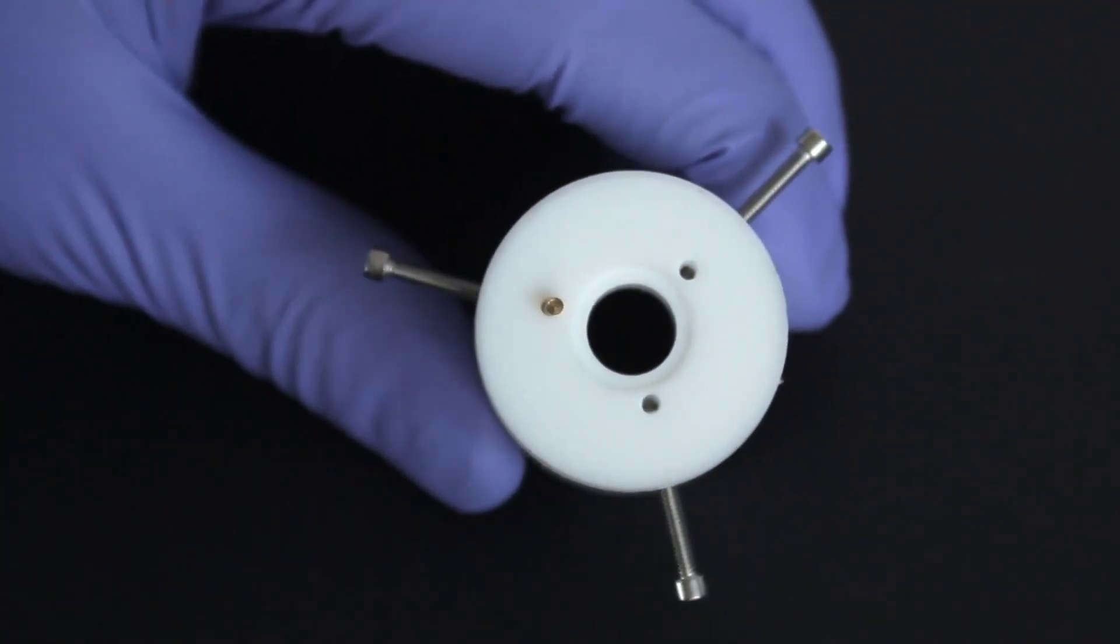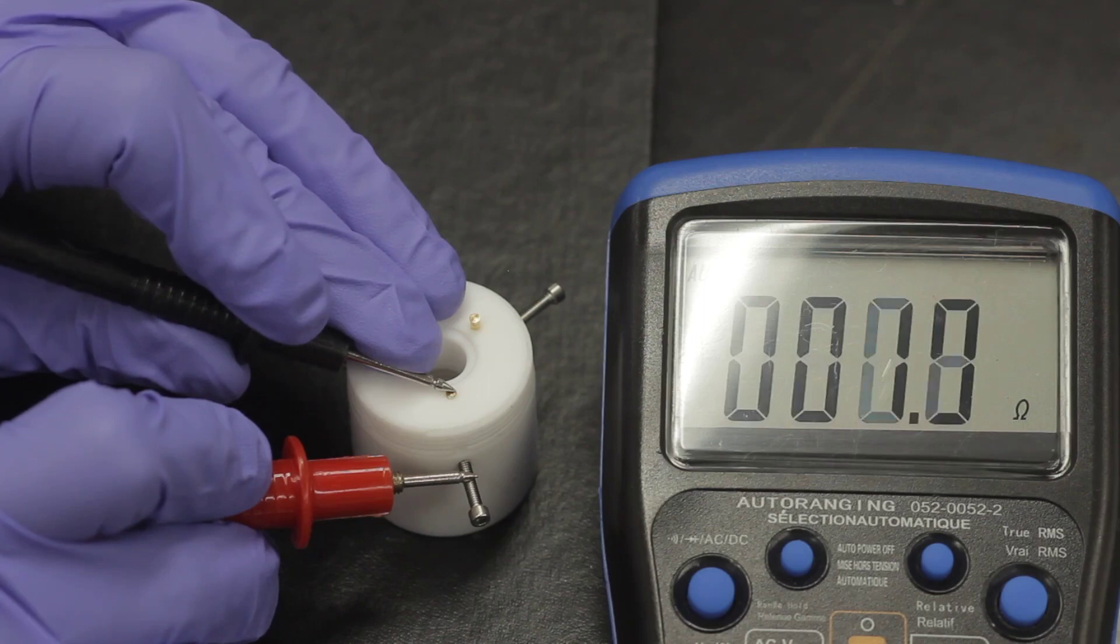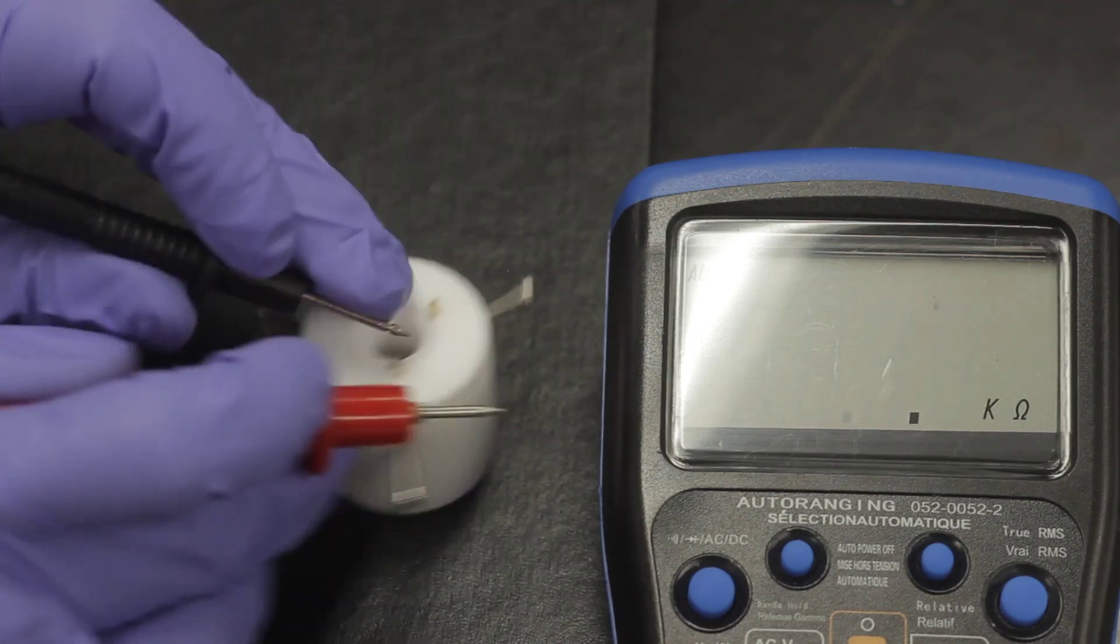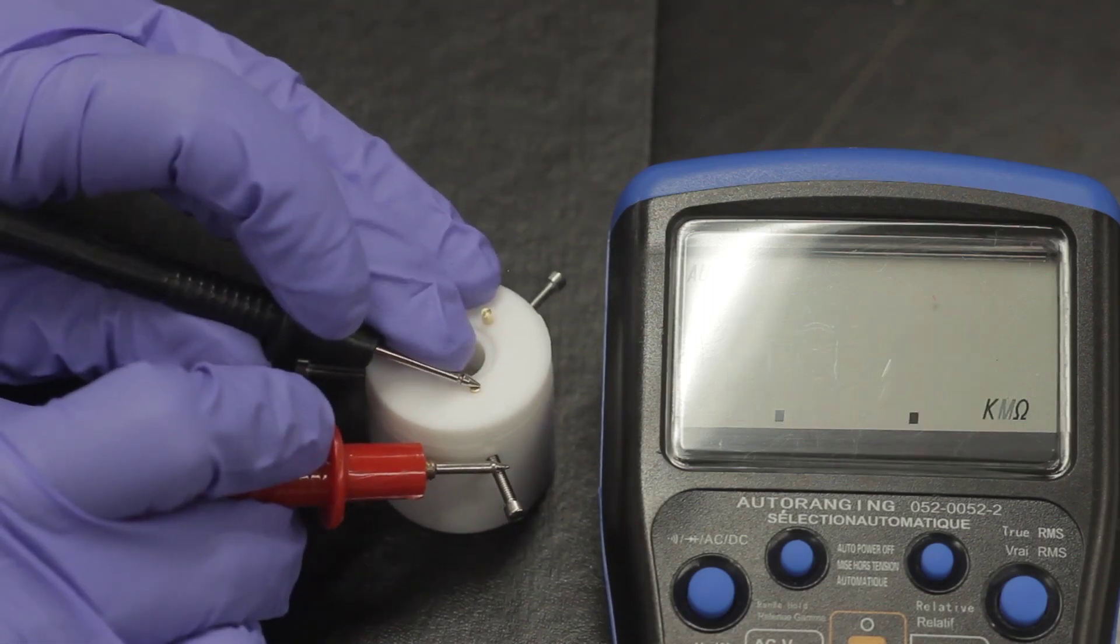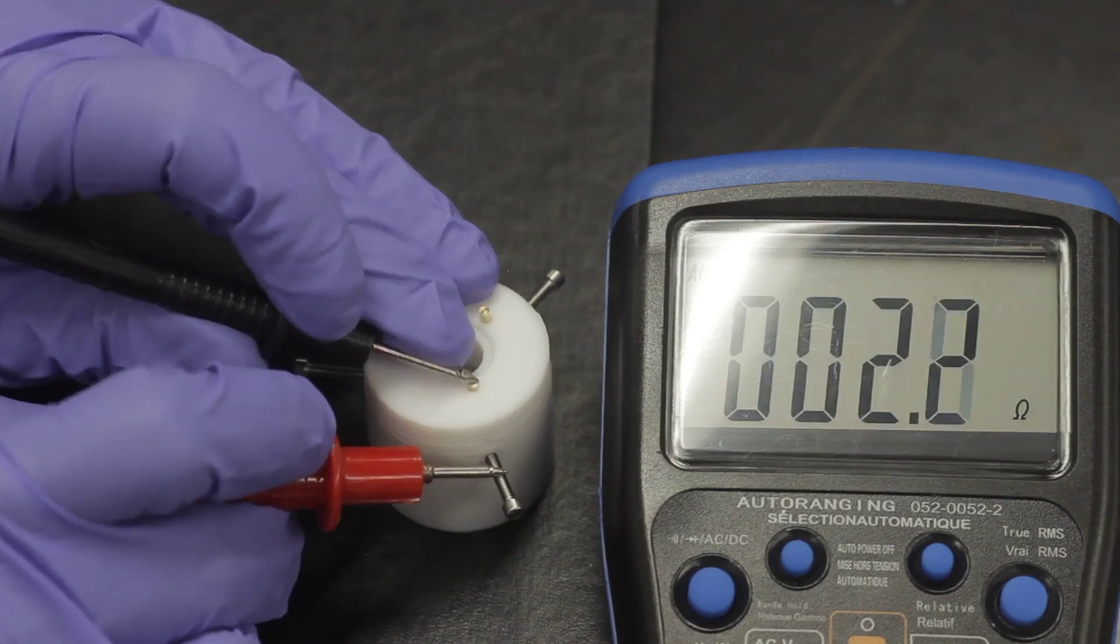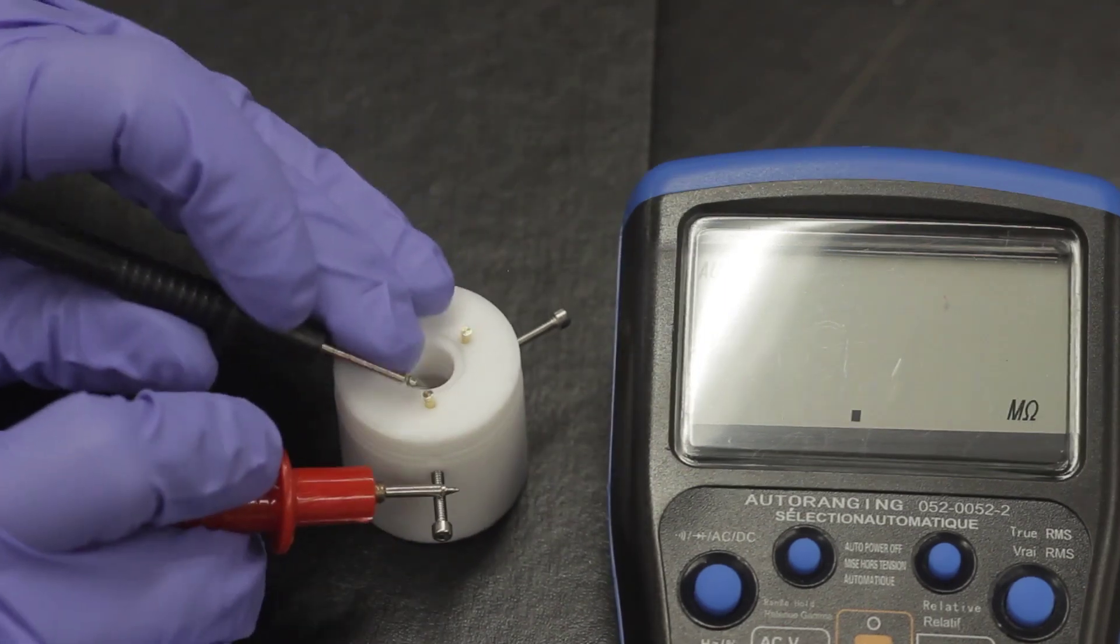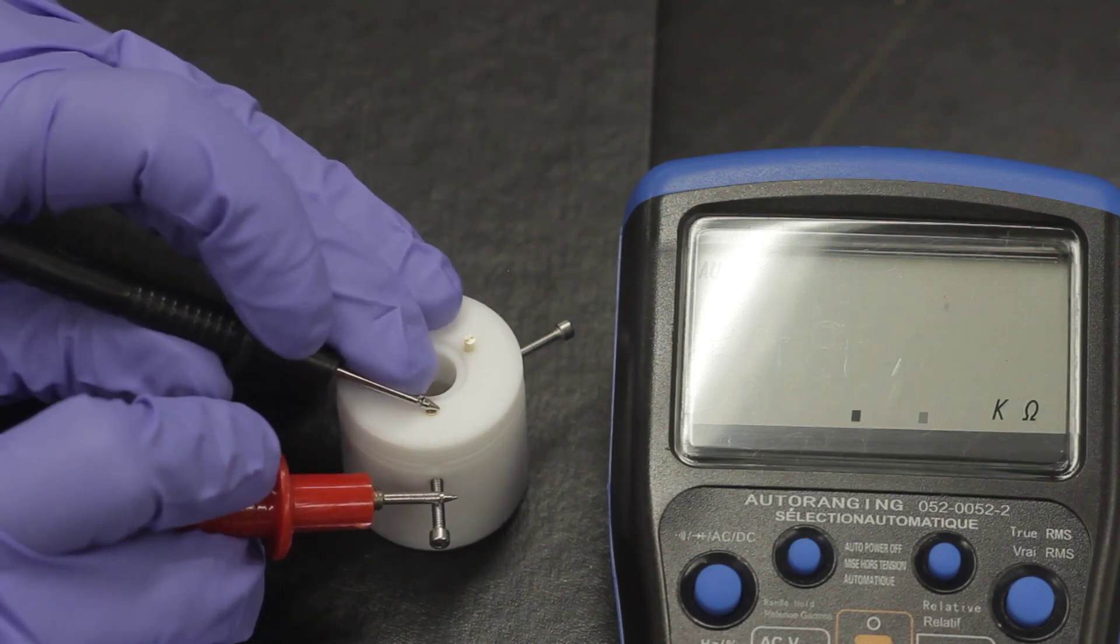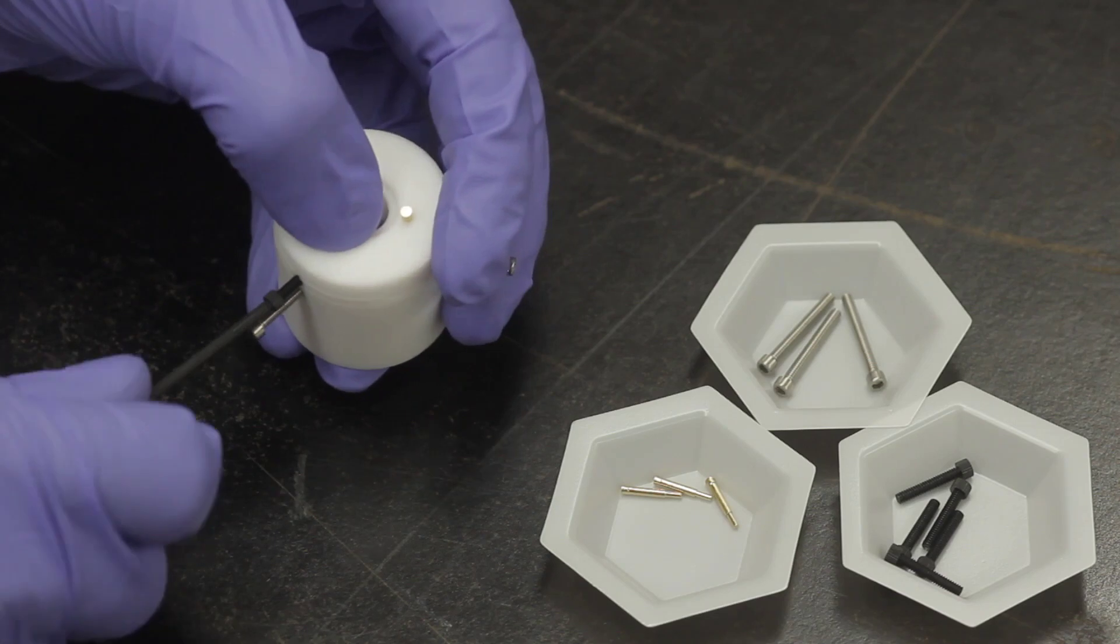Check the electrical contact between each pin and its corresponding stainless steel screw. This is easily done by measuring the resistance with a multimeter. The resistance should be under 10 ohms. If there is no electrical contact, remove the pin and screw, and blow some compressed gas through the hole to dislodge any foreign material which may be preventing contact.